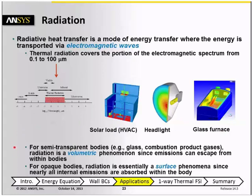For radiation in semi-transparent bodies, or in certain gases like combustion products, radiation is a volumetric phenomenon because emissions escape from within the bodies. On the other hand, for opaque bodies, radiation is essentially a surface phenomena because nearly all emissions are absorbed within the body.